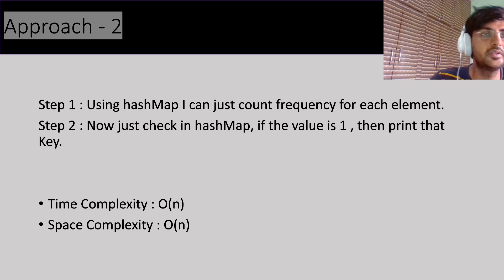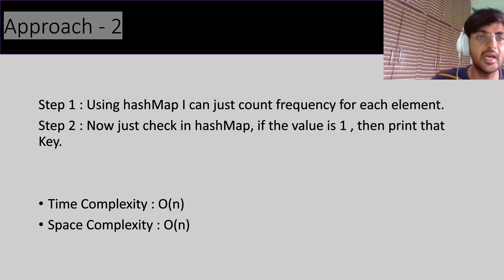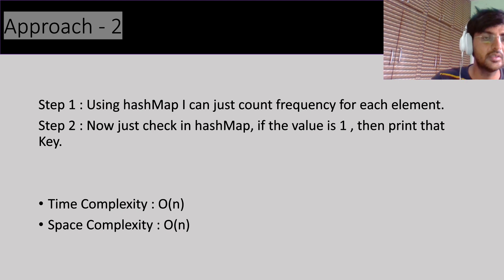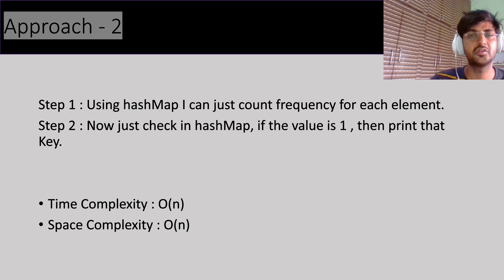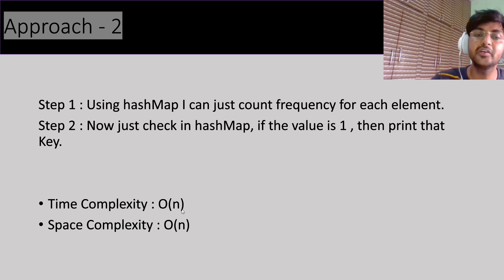Can we improve it? Yes, we can. Approach two: we can use a HashMap. Whenever you want a count of elements, you can use a map to store the count. We use the HashMap to count the frequency for each element, then check if the count value is one — that is the element appearing only one time. Time complexity is O(n), but space complexity is also O(n) since we use an extra HashMap.